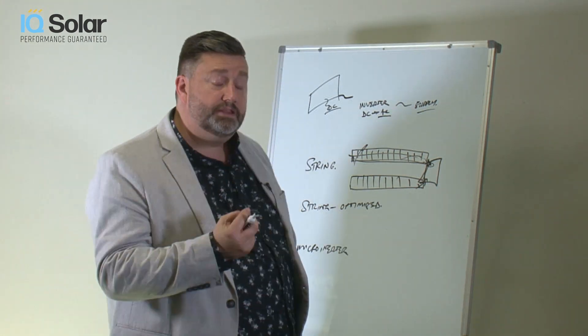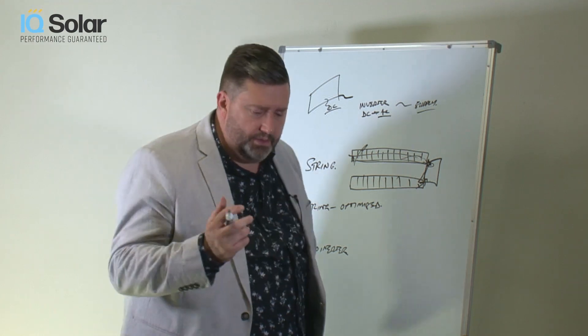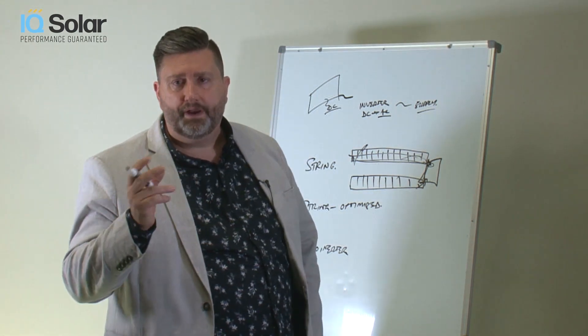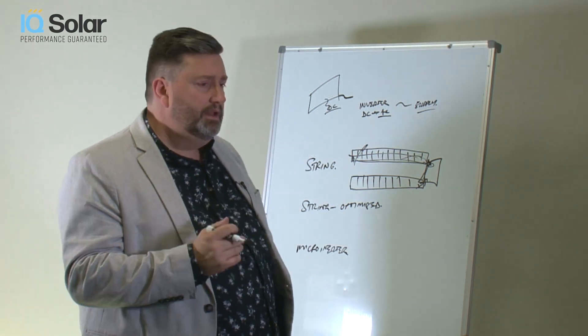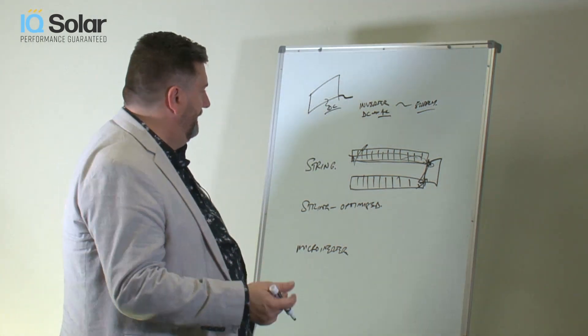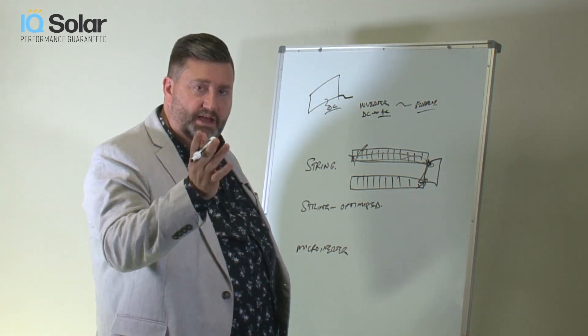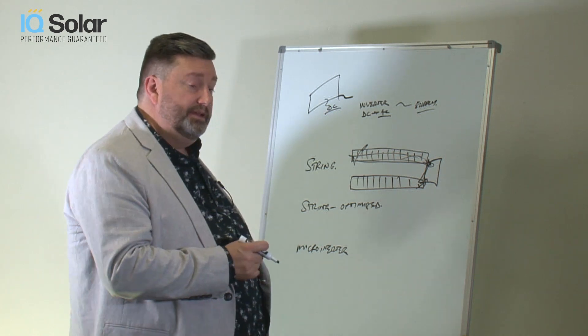So this is one of the constraints of a string inverter system. They make sense when you've got a nice clear roof, no shading. But there's other factors, like even bird poo, will cause this to be suboptimal.